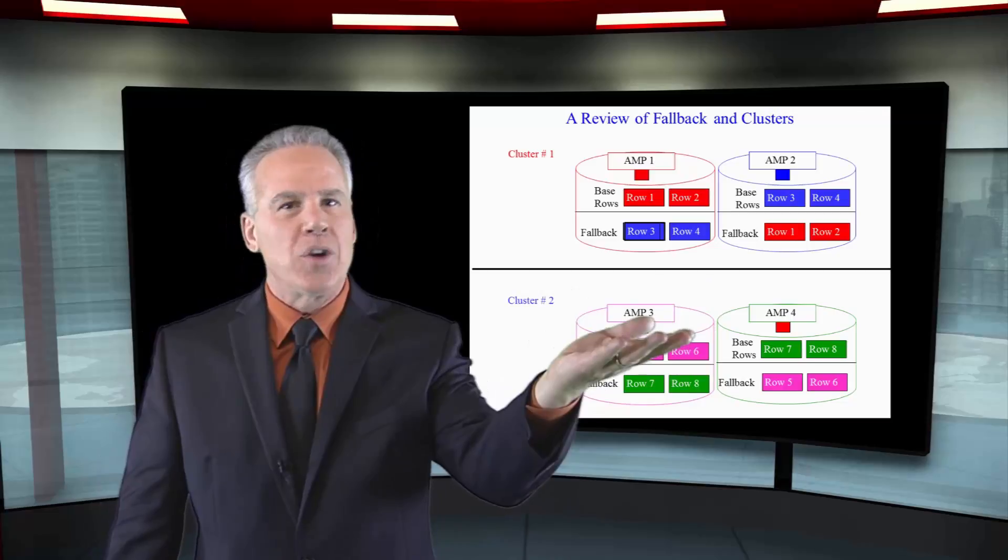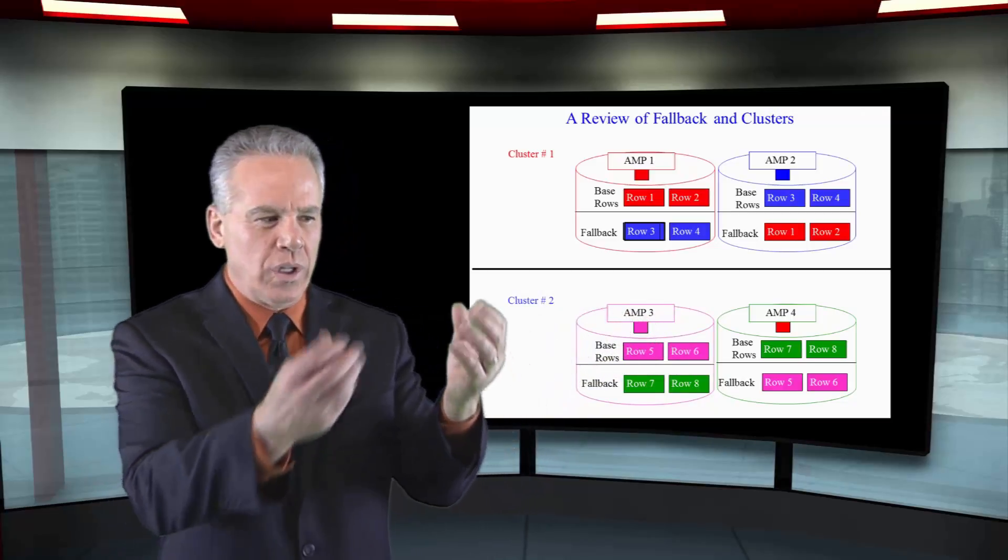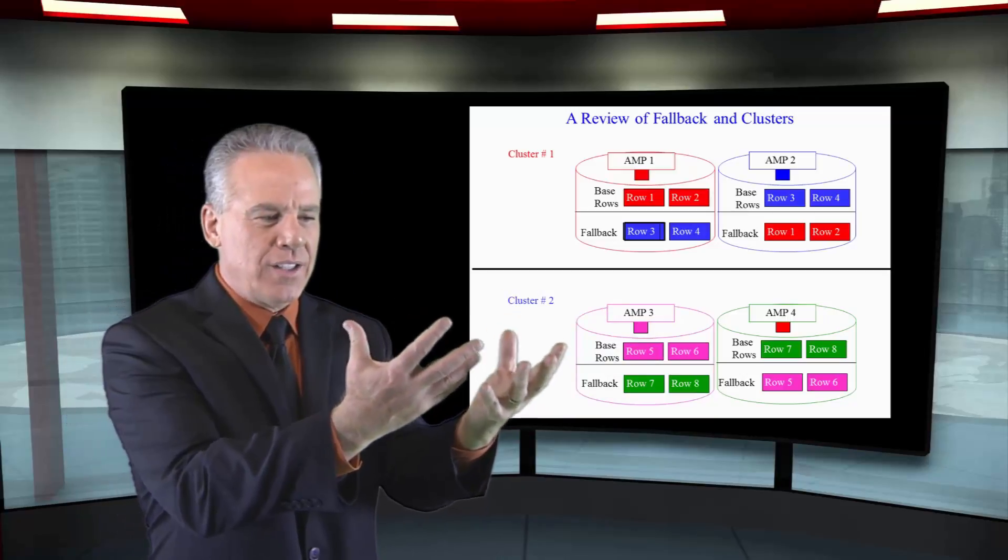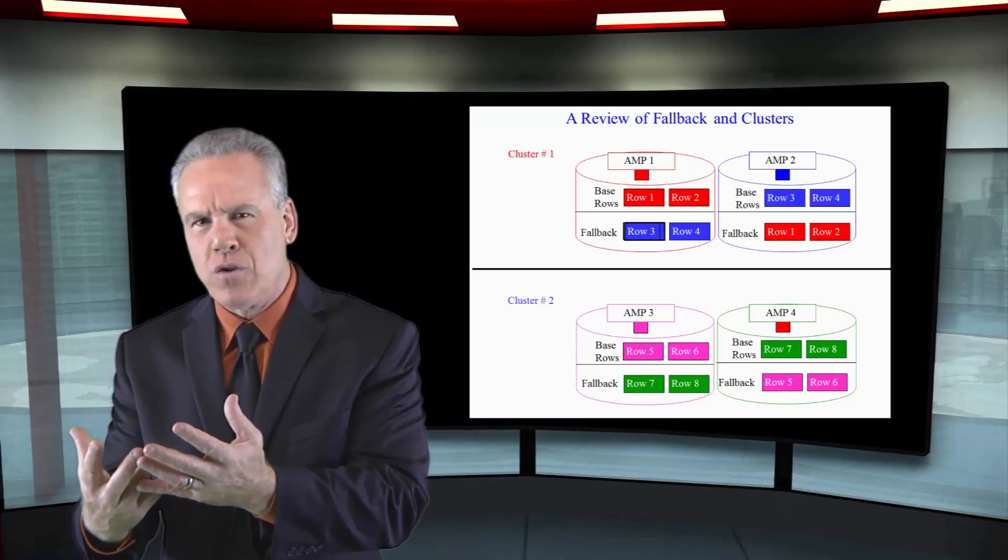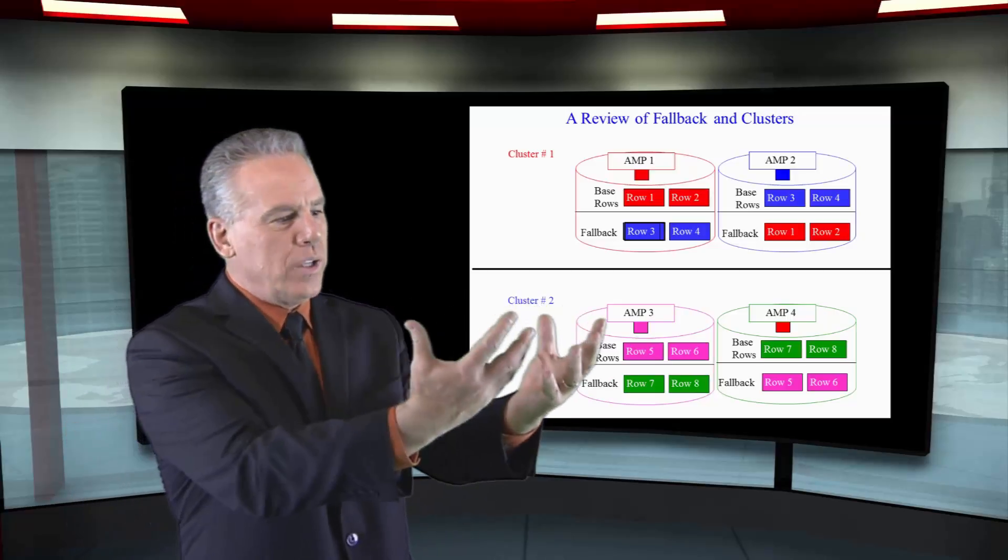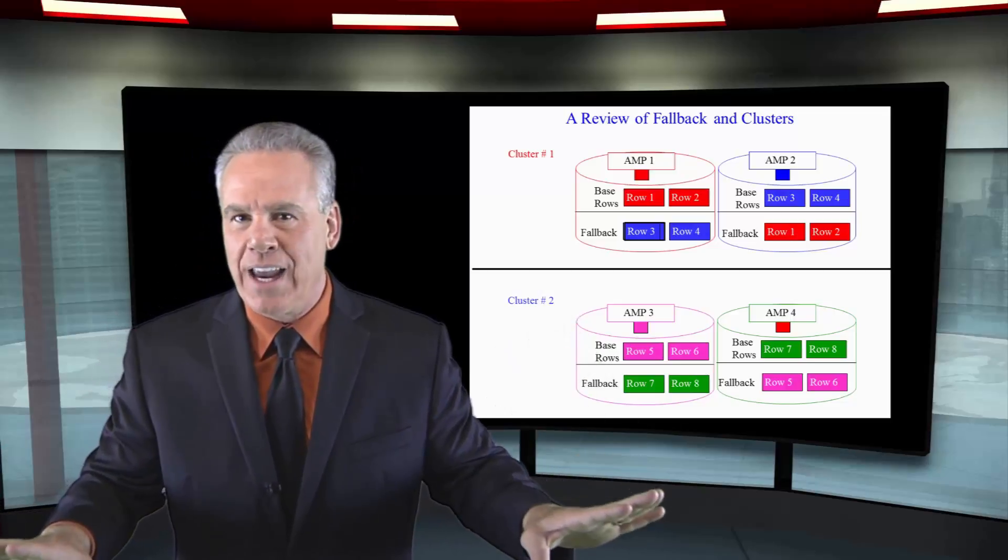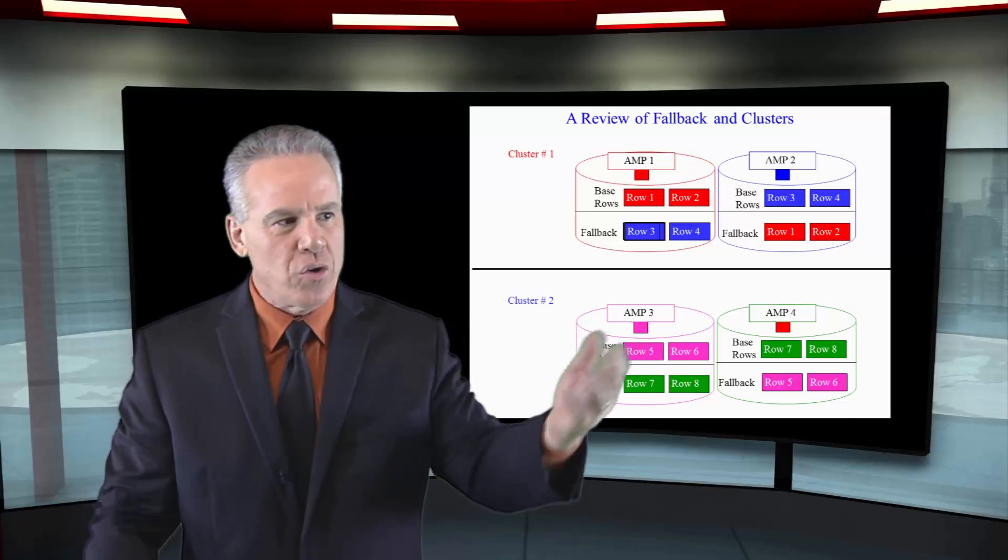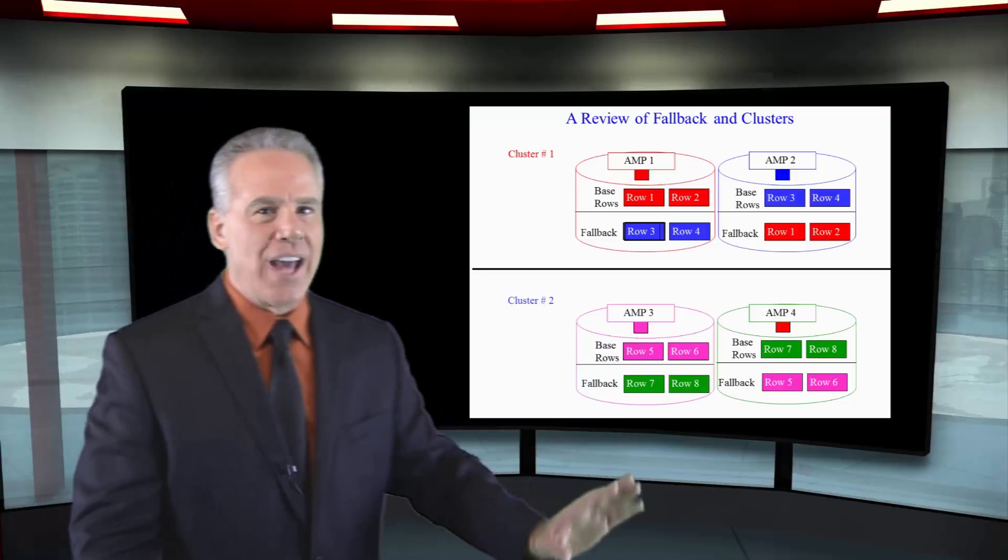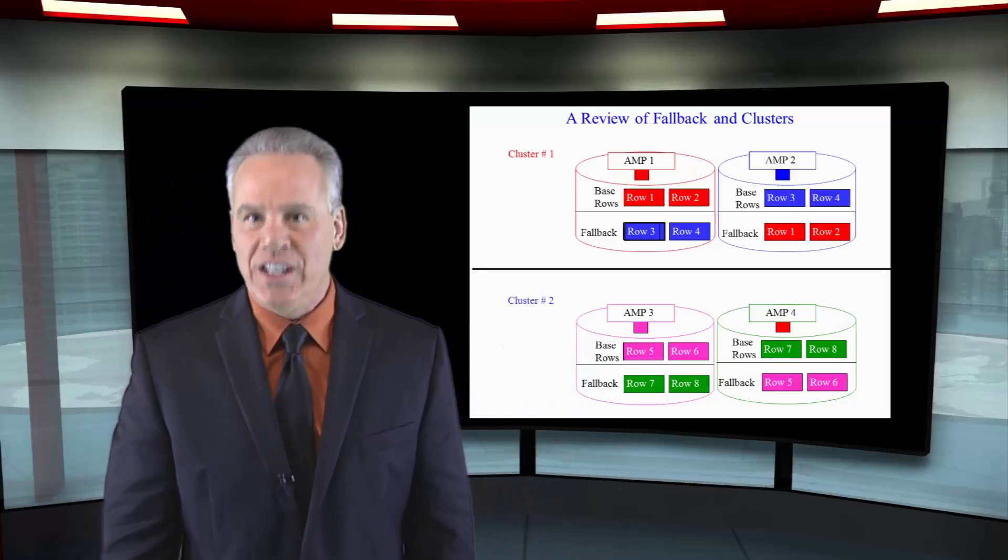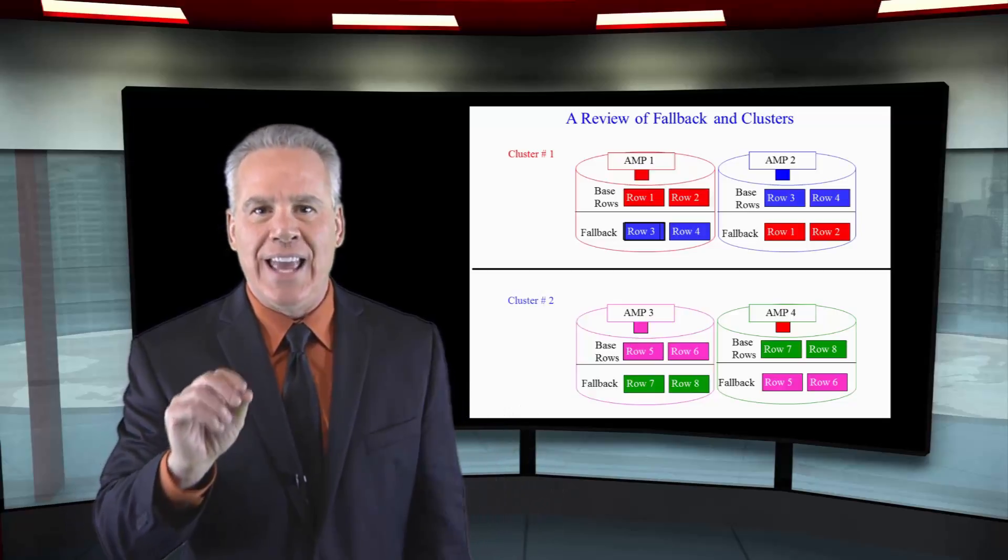And of course, those two AMPs are in the same cluster. So you could be asked a question, will an AMP ever write its data to another AMP outside the cluster? Of course not. Only writes to each other's disk in the fallback area within the same cluster. So you can always lose one AMP per cluster, and in the bottom you can see that we've got two more disks watching each other's back. That's the way it works. Two AMPs will be in a cluster.